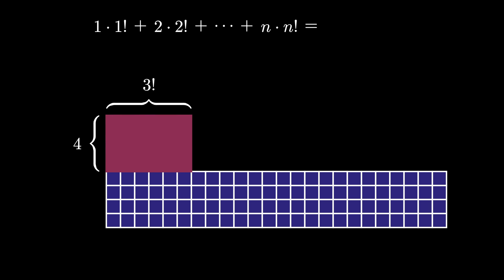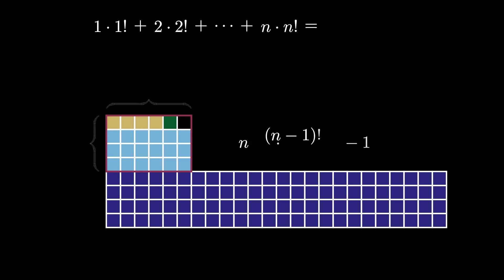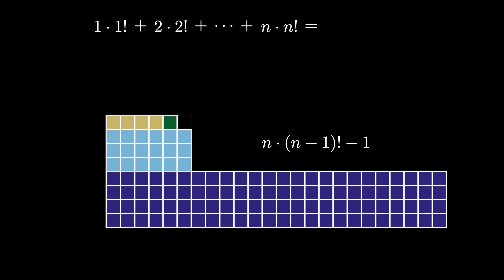We can repeat this process over and over again, eventually ending with an n by n minus 1 factorial sized rectangle, missing 1 square inside. But that means that we have n times n minus 1 factorial minus 1 squares, or n factorial minus 1 squares.